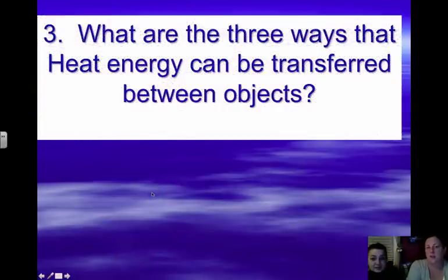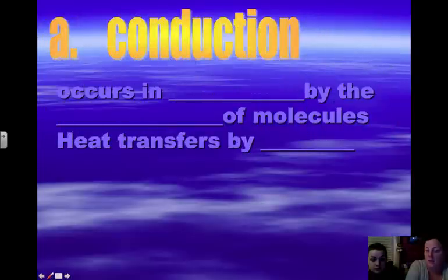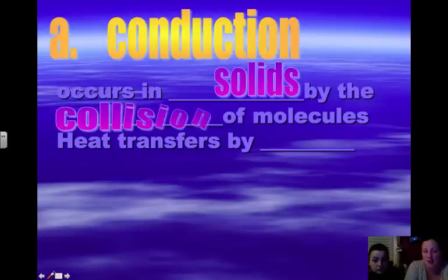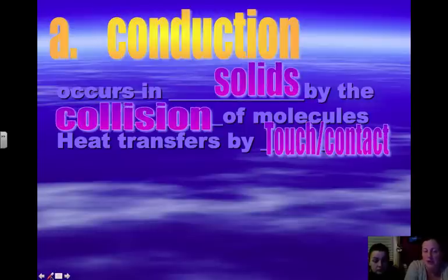We're now going to talk about the three ways heat energy is transferred between objects. The first type is conduction. This occurs in solids by the collision of molecules. Heat transfers through solids by touch or contact with other molecules.